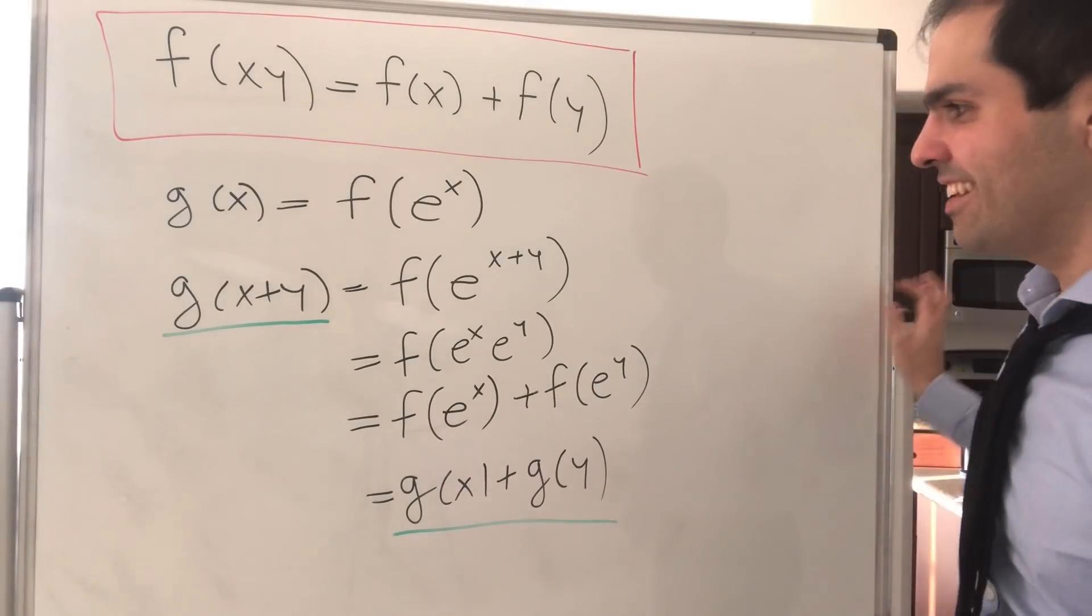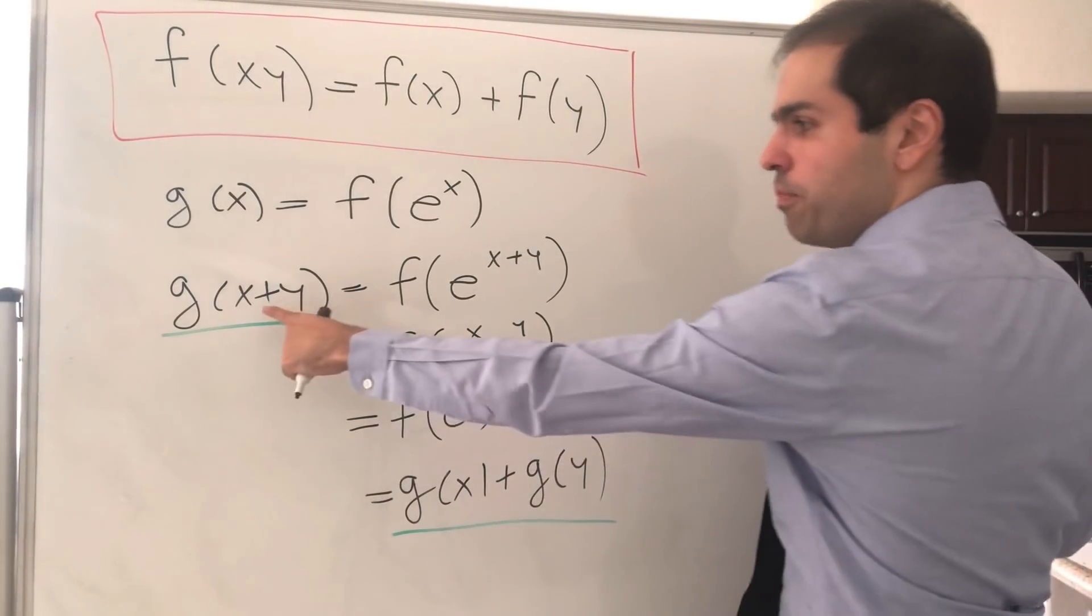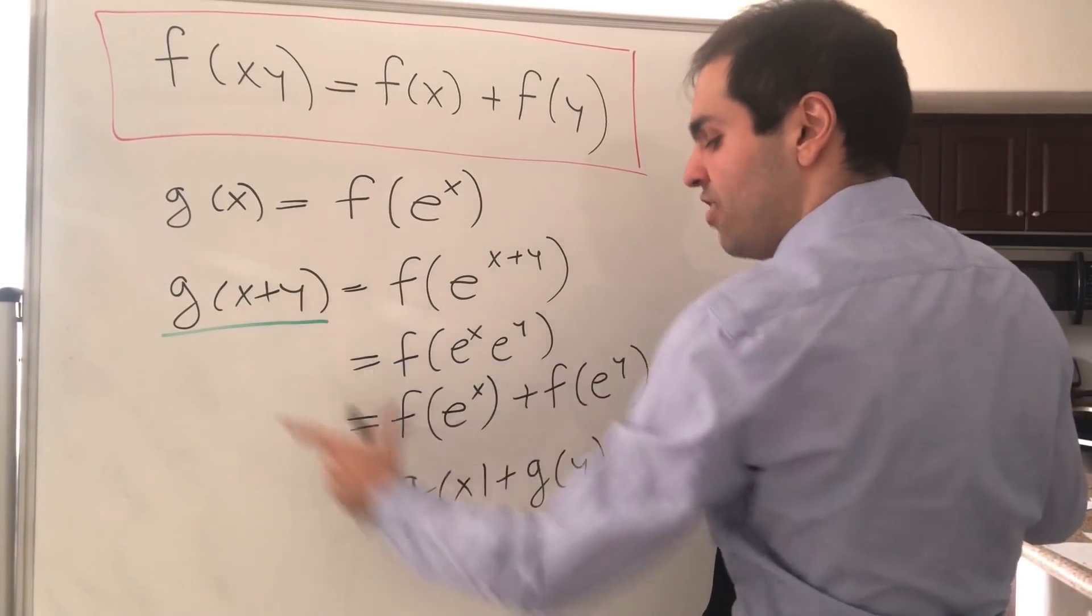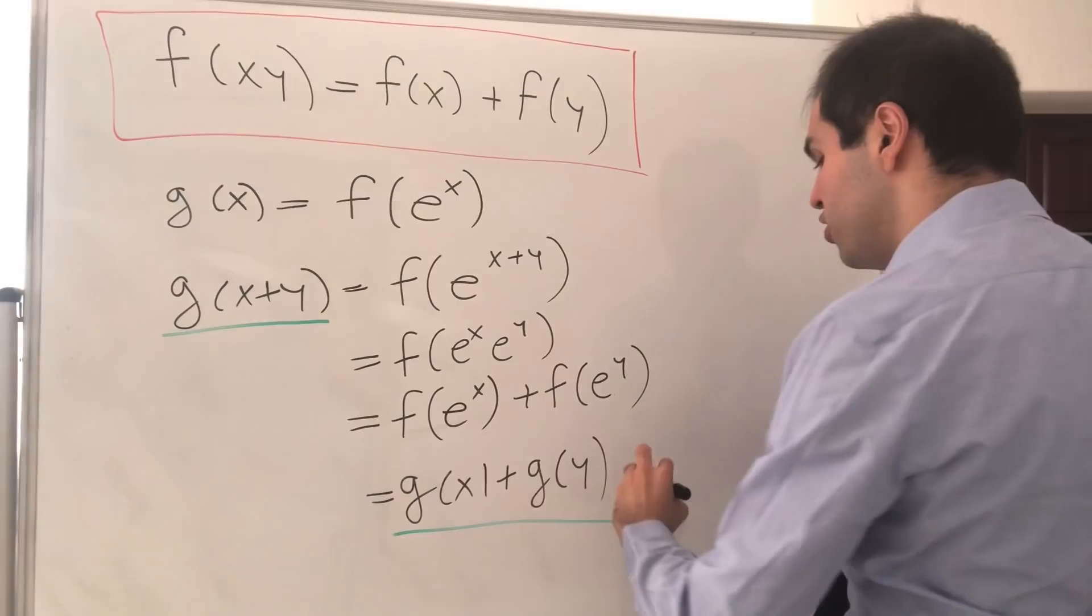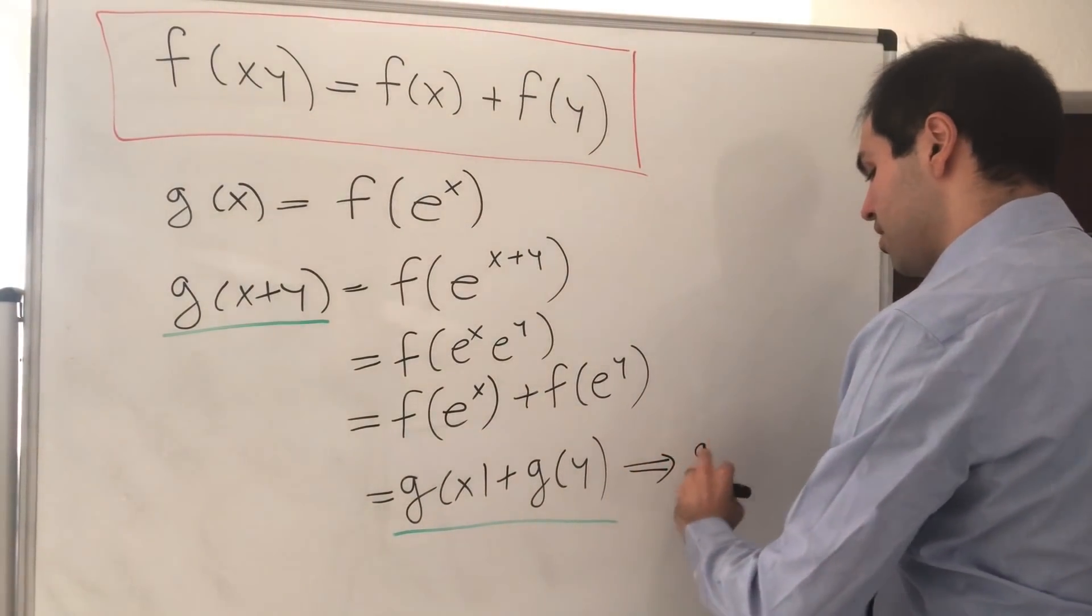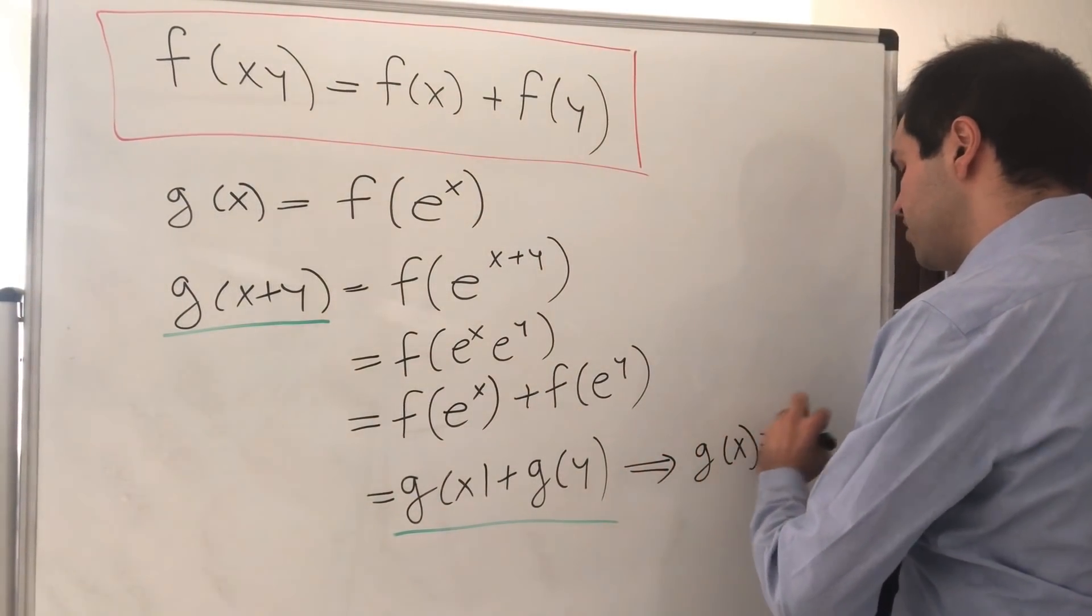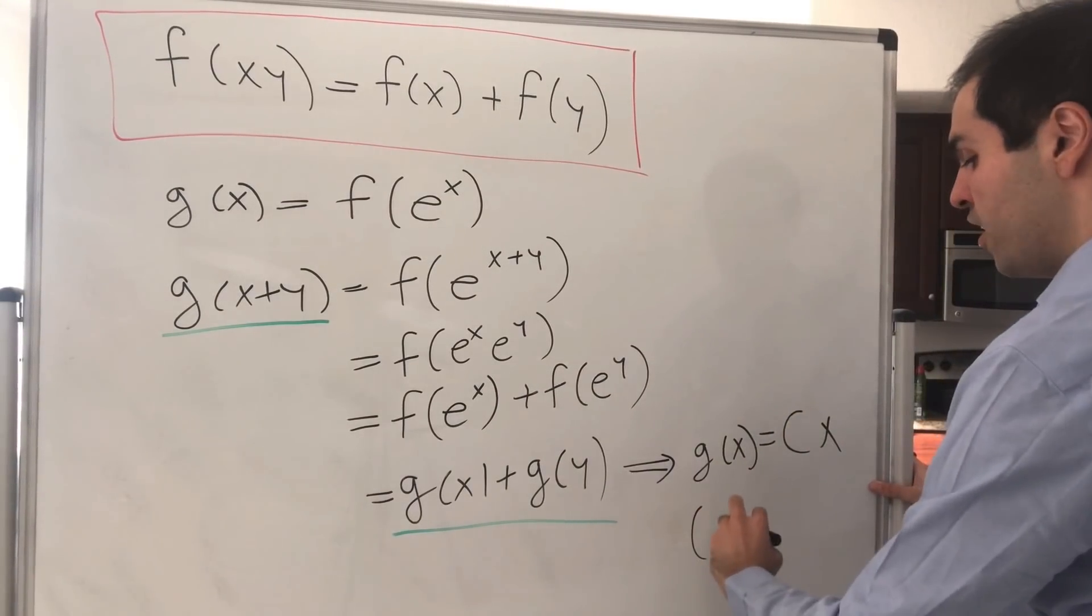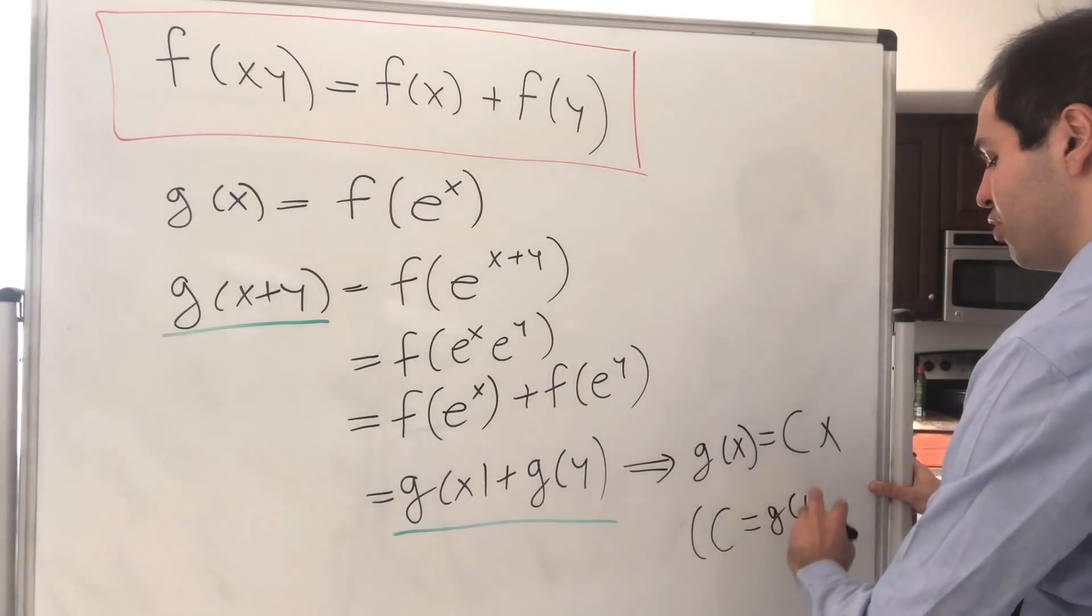And in particular, it turns out the only continuous functions that satisfy this identity are the linear functions. So in particular, what we get is g of x equals c times x, where c is just given by g of 1.